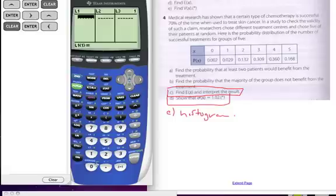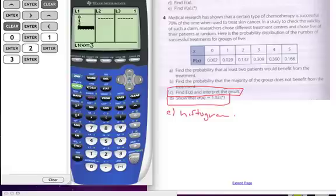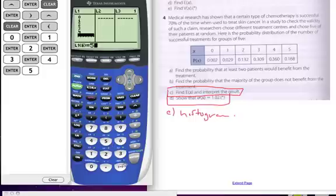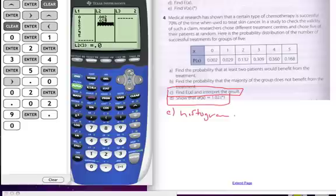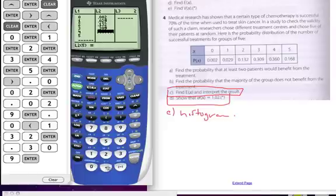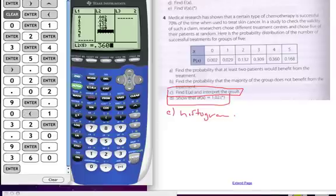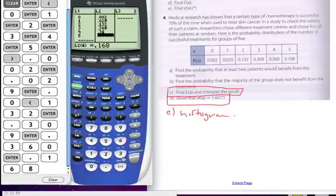So now I'm going to put in my values for my random variable: 0, 1, 2, 3, 4, 5. These are my outcomes for my random variable. My probabilities that are associated with there are 0.002, 0.029, 0.132, 0.309, 0.360, 0.168. And those are all my probabilities.